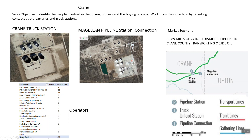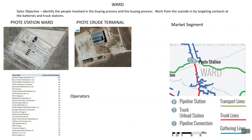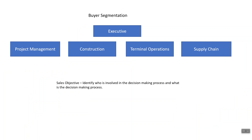We've got their Crane assets — a truck station and an interconnect station. There's no gathering pipeline there currently, but we know they are looking at a project in that particular area, so we need to manage that appropriately. In Ward, there's some gathering pipeline, a crude terminal, and a truck station. Who are the people there, what's the decision-making process, who do they report into, and can they help us with our sales objective?